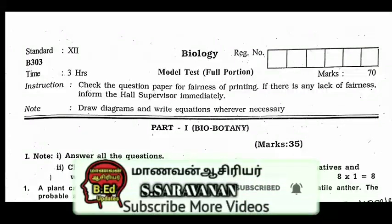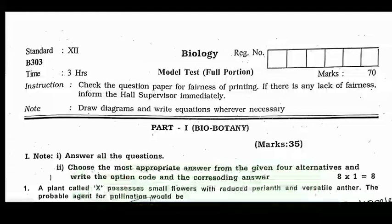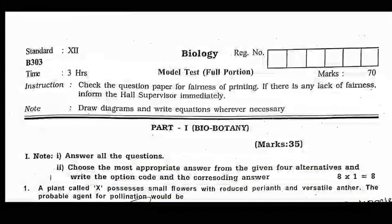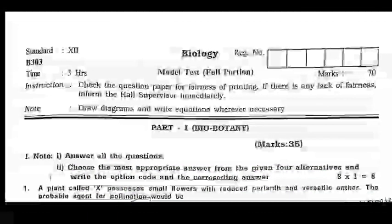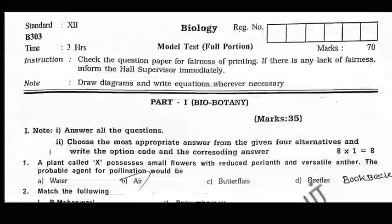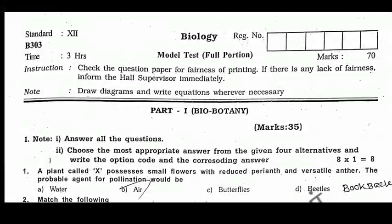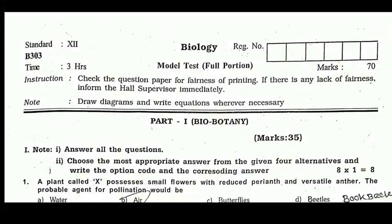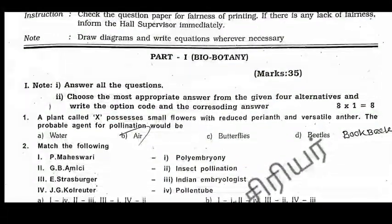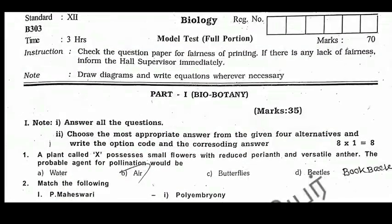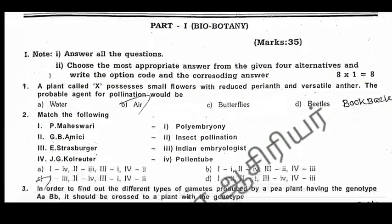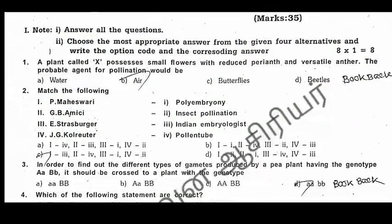One of the schools will be official notification. So if you find biology part 1 — bio botany — and part 2 — bio zoology — you can find a full portion of this model. There is a question about botany and zoology. So first, you find bio botany.